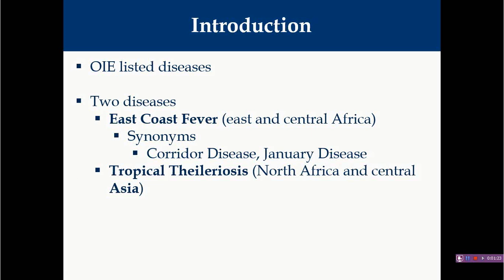Tropical theileriosis is generally seen in Central Asia including India and is a very important disease of crossbred animals rather than indigenous cattle. Particularly in India — Gujarat, the Kankrej region, and Gir animals — this is mainly a disease of HF cross, ZC cross, or any other crossbred animals.